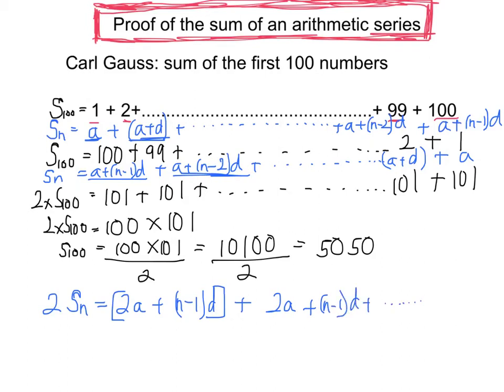And then all the ones in the middle will also be that. And let's go to the end. You see the last term is also going to be 2a plus n minus 1d.